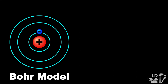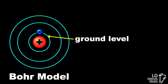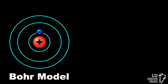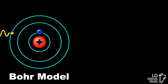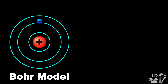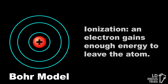Electrons usually start off close to the nucleus in the ground state. But they can transition up to the next energy level, called the first excited state, if they absorb just the right amount of energy from an incoming photon. If the electron absorbs enough energy to transition up two levels, it reaches the second excited state. In fact, an electron can gain so much energy from a photon that it can leave the atom altogether — or ionize.